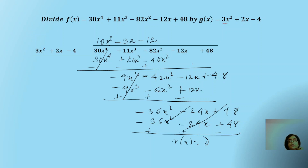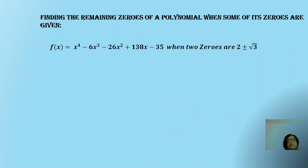So r(x) = 0. The quotient we obtained, when multiplied by the divisor, gives back the original f(x). We can say q(x) × g(x) = f(x) because r(x) = 0, so adding or not adding r(x) makes no difference. Now, what are the applications of this division algorithm? The first application is finding the zeros of a polynomial when some of its zeros are given.